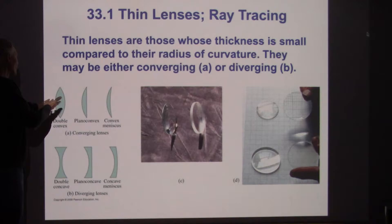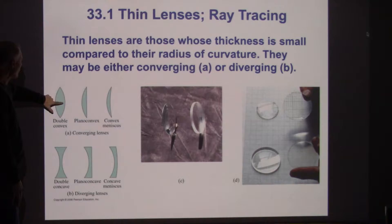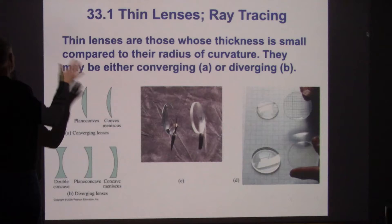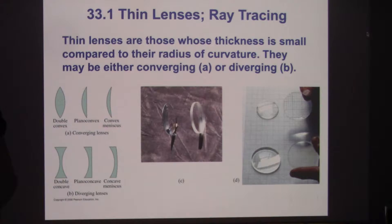We're going to be looking at what are called thin lenses. A thin lens has two refractive surfaces, so there's a refraction that takes place at one surface and a refraction at the other. But the two surfaces are close enough that we can treat the two refractions as if they overlap — as if they're both happening in the same plane. The formulas have a little approximation to them, but they work pretty well.